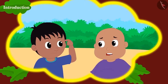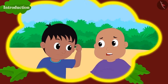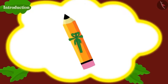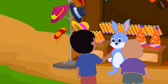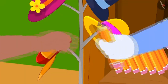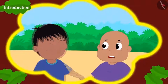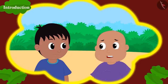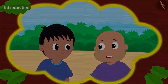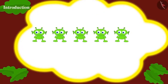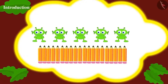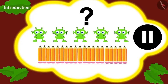Raju and Bablu are planning to buy pencils as a gift for Jeev's friends. They bought twenty pencils from Bunny's shop. Raju asks Bablu how they would distribute these pencils among five of Jeev's friends. Children, can you find the answer to this? If you want, you can pause the video and find the answer.